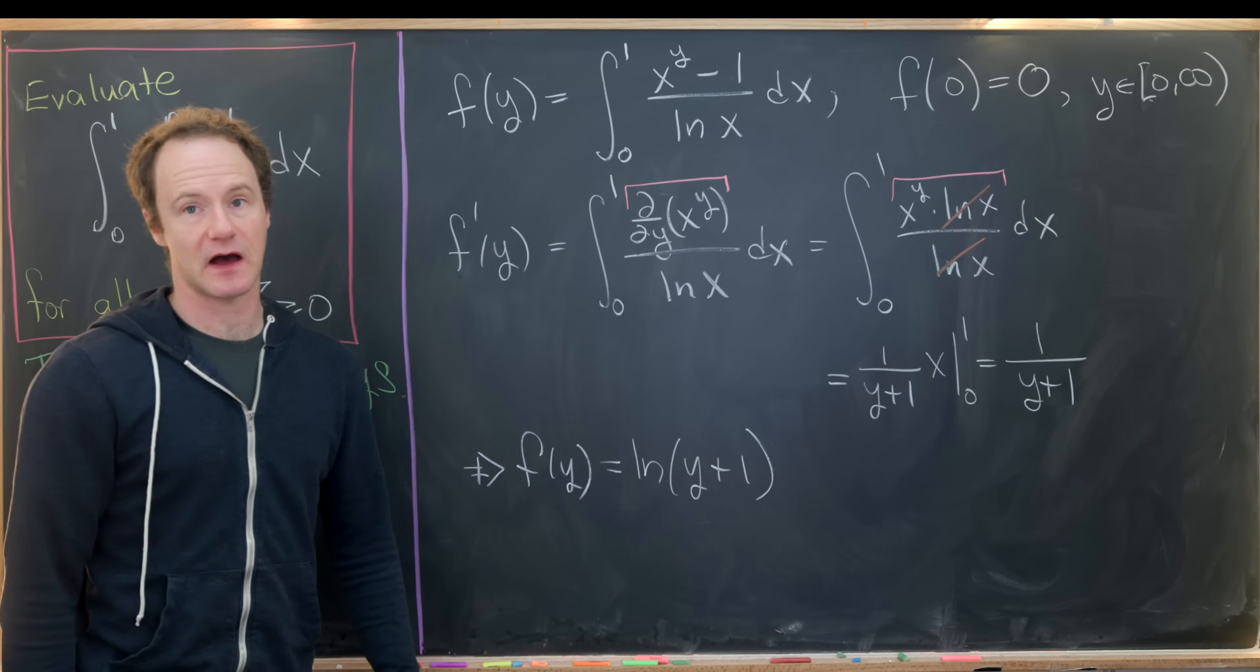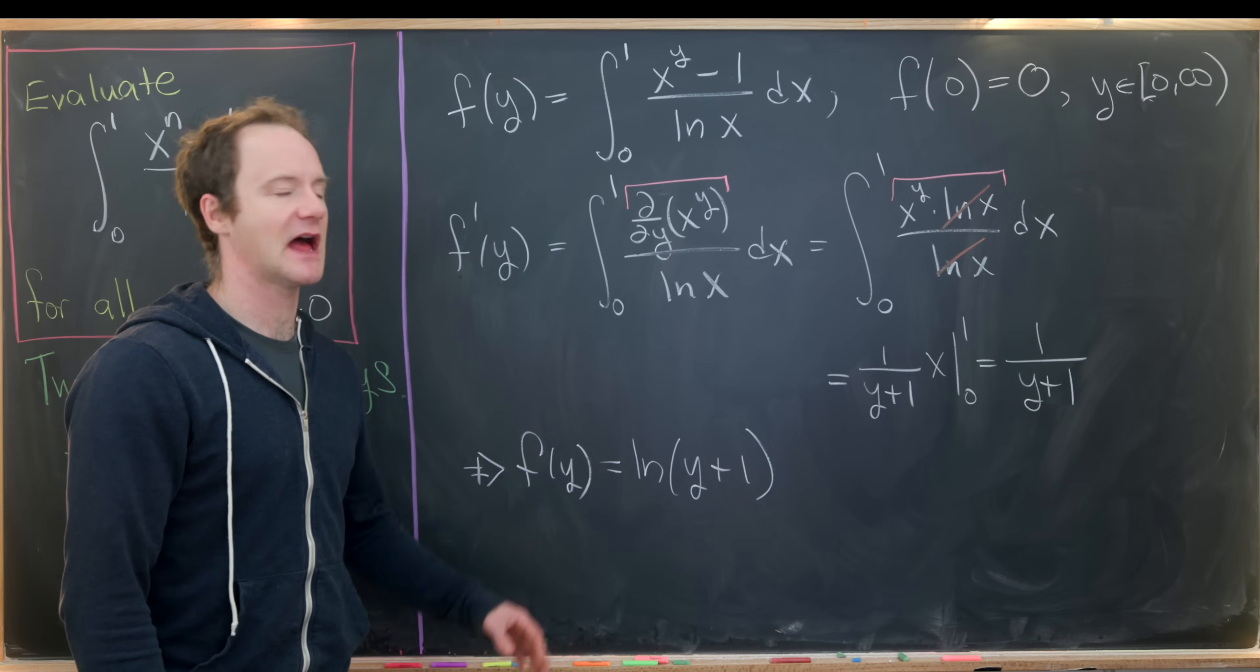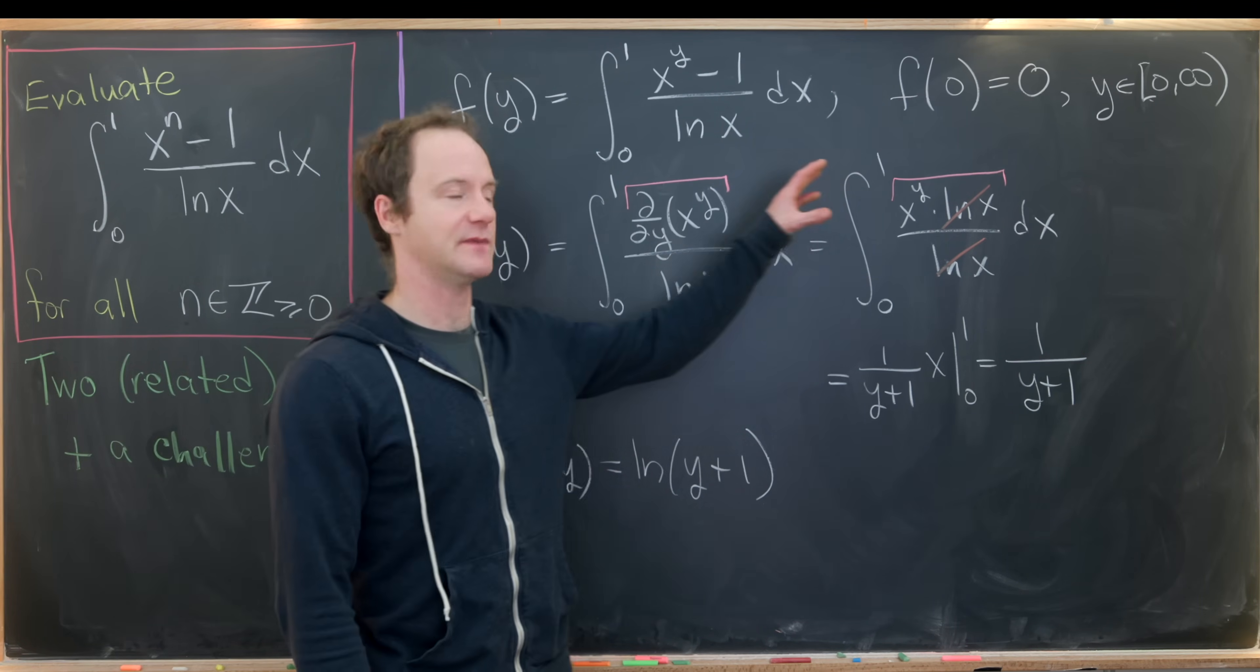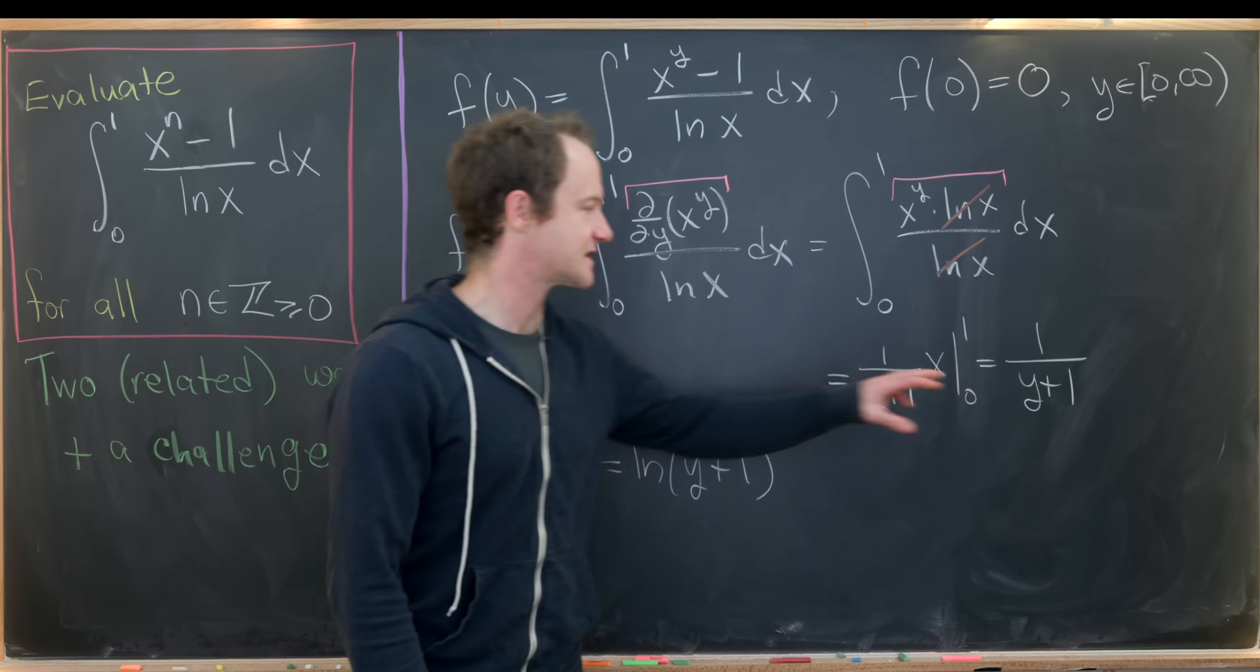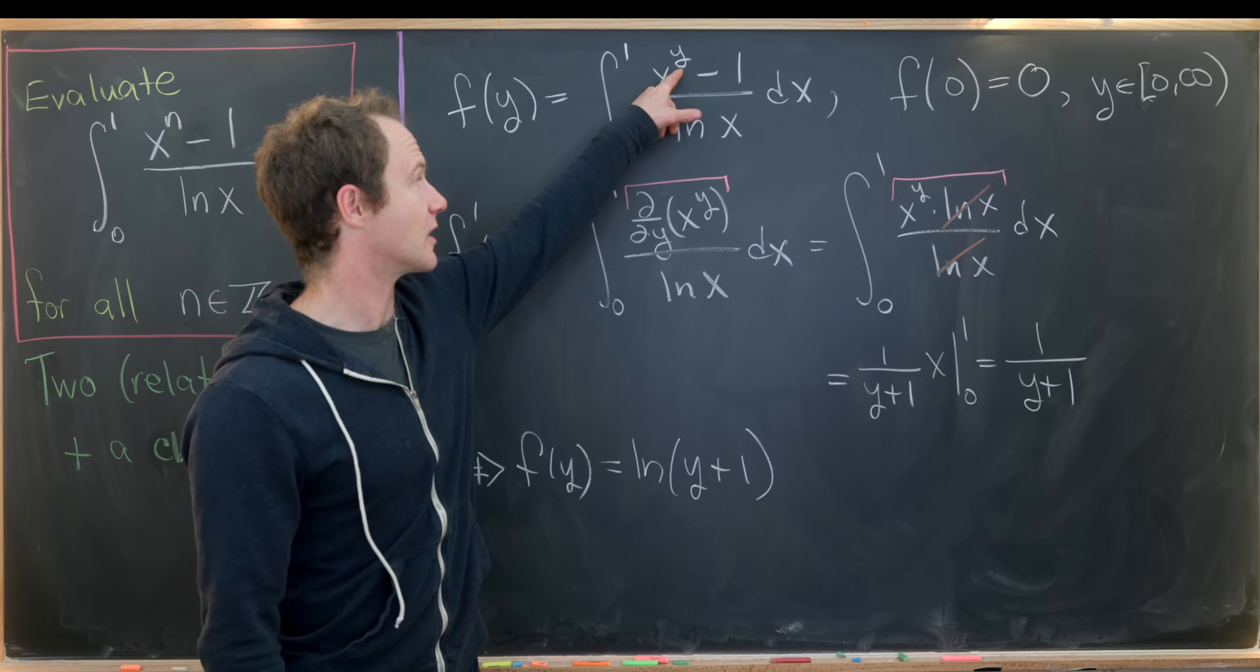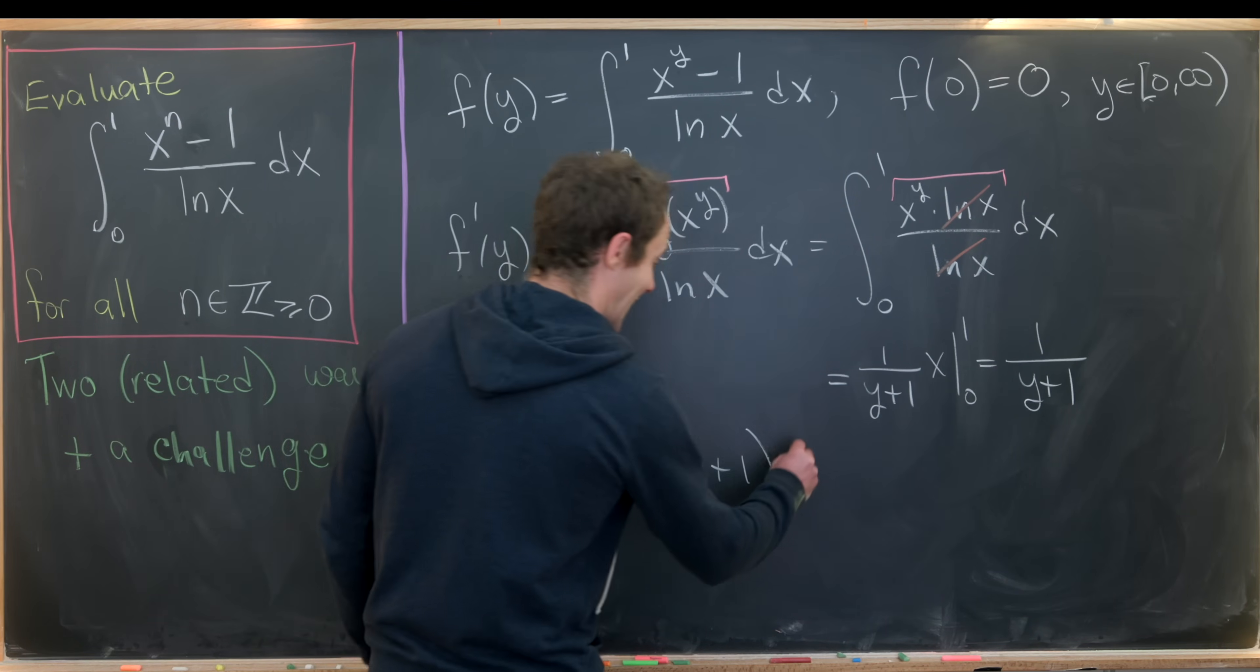We don't need an absolute value here because we're taking y to be non-negative. So in that previous discussion, we would need to include an absolute value if we expanded the values of n that we were interested in here. Notice that n equals negative 1, which is the same thing as y equals negative 1, would give us the natural log of 0 here, and that would be super problematic. It would obviously also give us the 1 over 0 over here. And in fact, if you just immediately plug in y equals negative 1 here, this integral will diverge, but we won't check that. So where are we? We've got f of y is natural log of y plus 1. We need to add a constant.